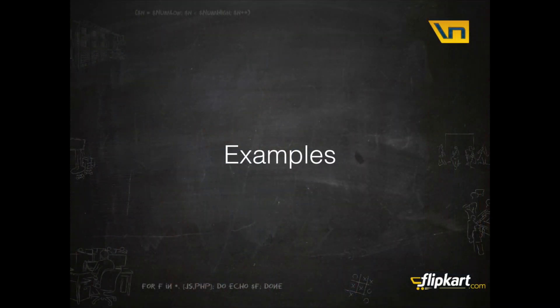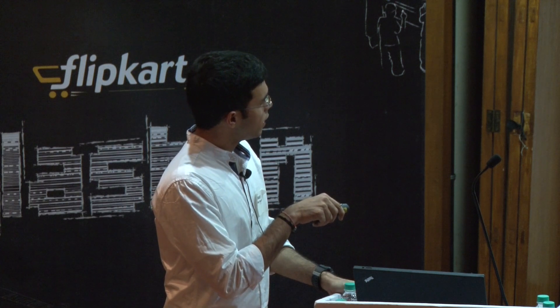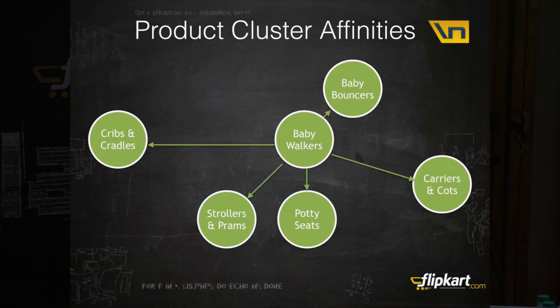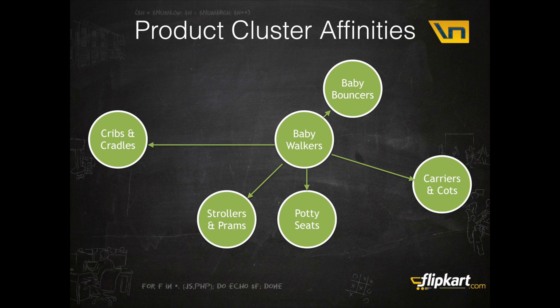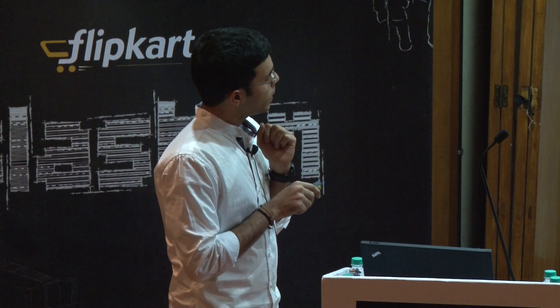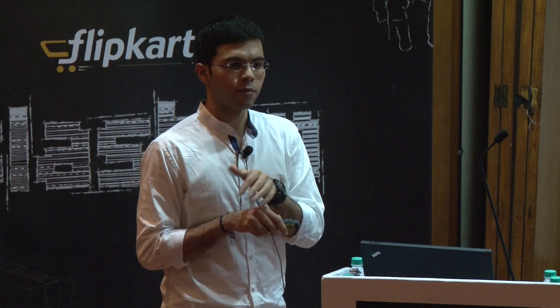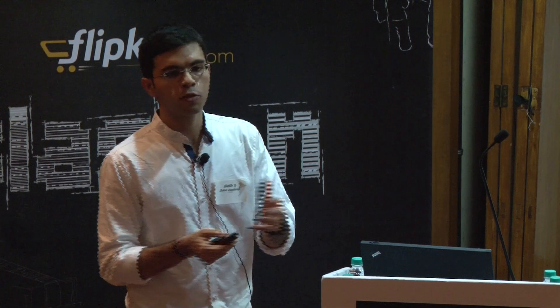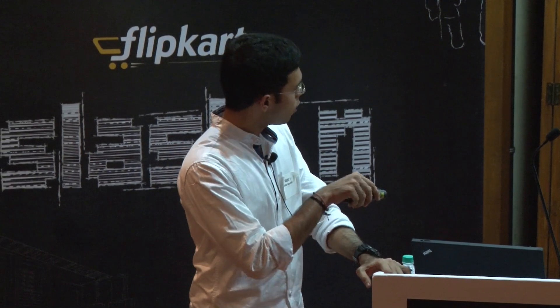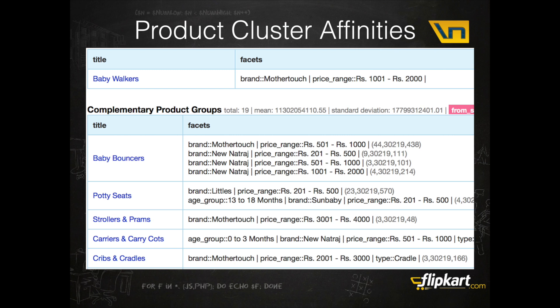Coming to examples: internally, this is one cluster of baby walkers. After computing the cosine similarity, I get this kind of graph that we represent internally. Baby bouncers seem to be predominantly linked with this, potty seats are next, strollers next, and so on. These clusters are kind of complementary to the main cluster — when someone is buying a baby walker, you're not only suggesting other baby walkers but also complementary items. Baby walkers might mean he has a baby, and maybe baby soaps or baby wipes could also be helpful. Inside Flipkart we represent this in a console — baby bouncers first, and this cluster is made up of attributes: MotherTouch as brand and a price range.